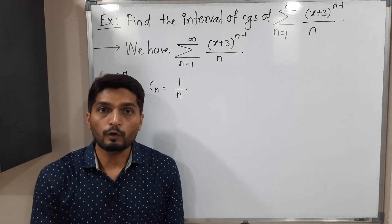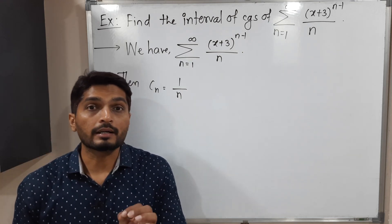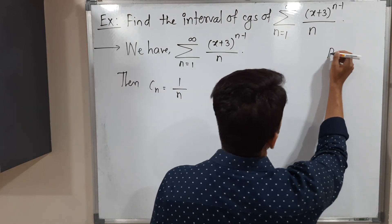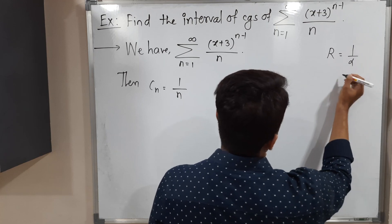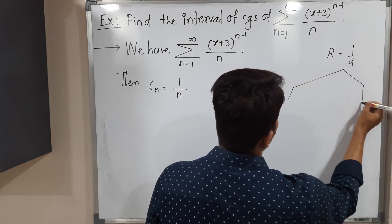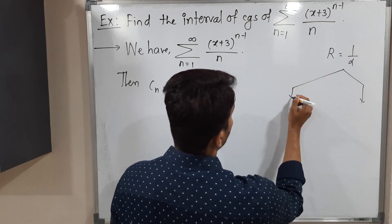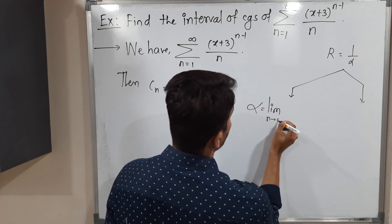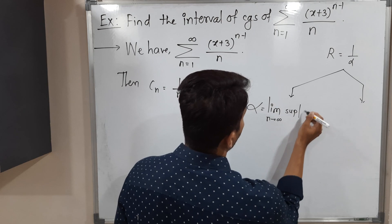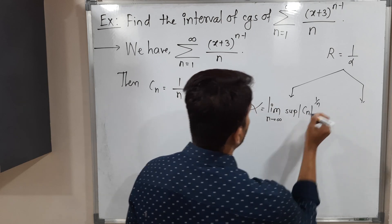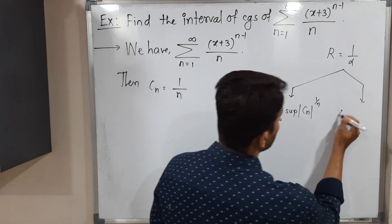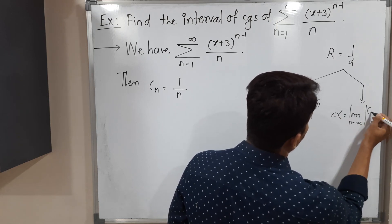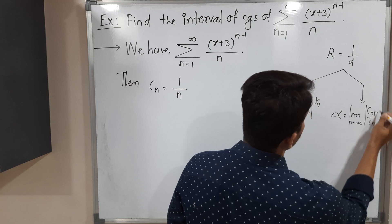To find the interval of convergence, we need to find the radius of convergence. The radius of convergence is the reciprocal of alpha. Alpha can be calculated in two different ways. The first formula is alpha equals the limit as n tends to infinity of the supremum of |c_n| raised to 1/n. The second formula is the limit as n tends to infinity of |c_{n+1} / c_n|.